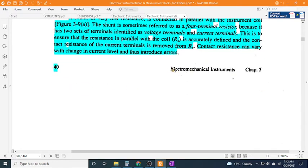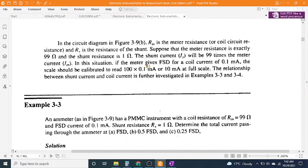In the circuit diagram in Figure 3-9B, R_M is the meter resistance or coil circuit resistance, and R_S is the resistance of the shunt.